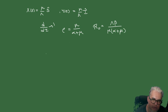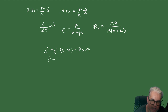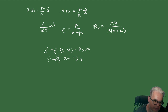Nuestro sistema adimensionalizado queda como: x' = rho·(1 - x) - R0·x·y, y' = (R0·x - 1)·y.